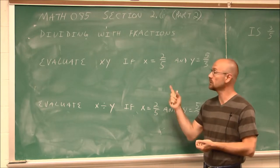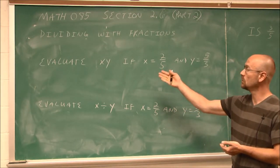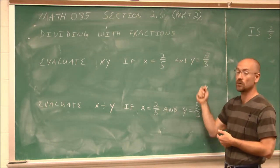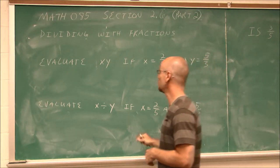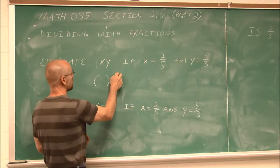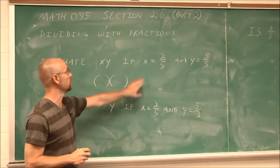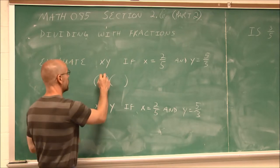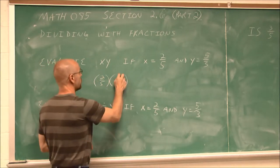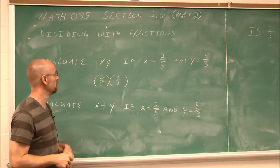The first thing we're going to look at is evaluate xy, or x times y, if x equals 2 fifths and y equals 5 thirds. To evaluate, I'm going to replace this x value and this y value with the given values. If x is 2 fifths and y is 5 thirds, and parentheses tell us to multiply in this case.